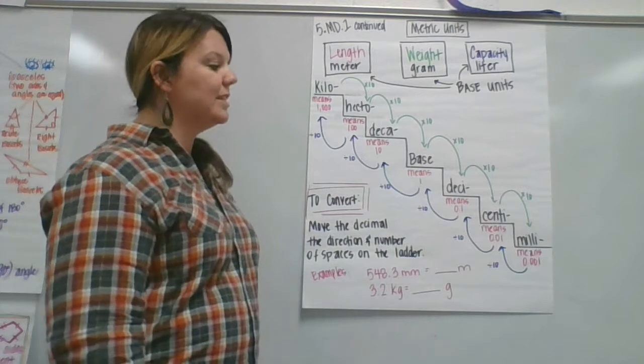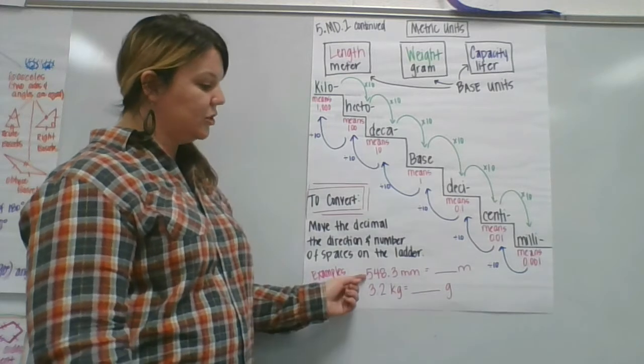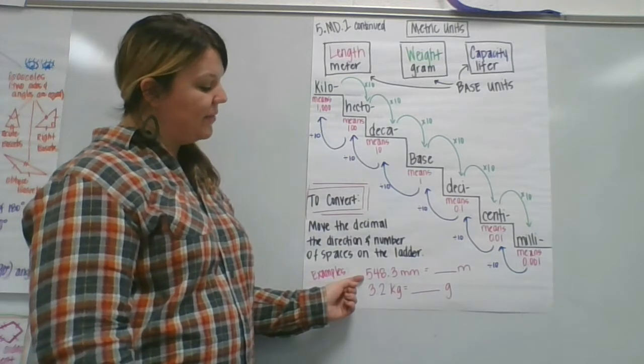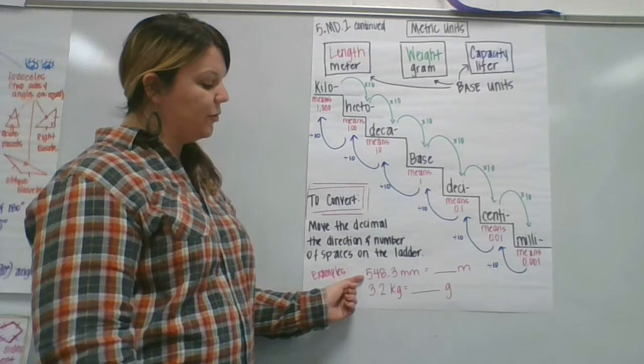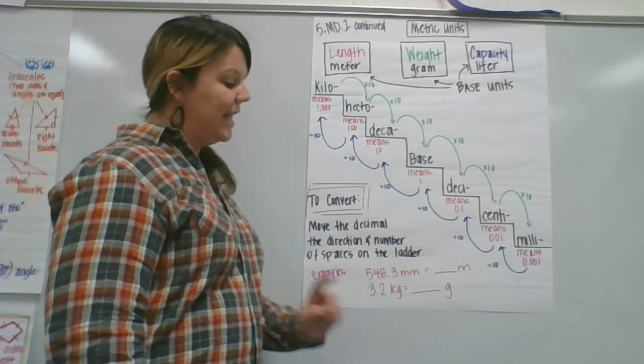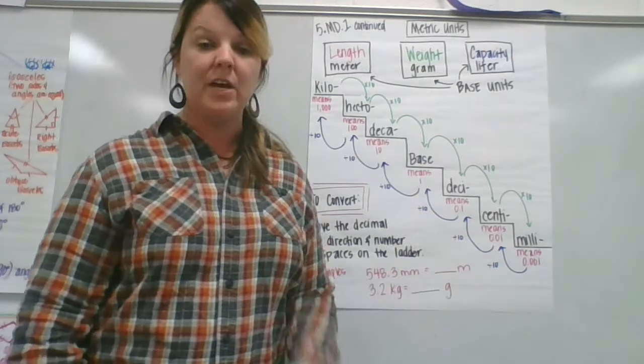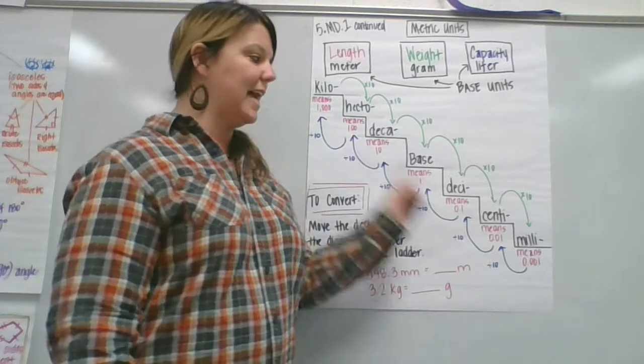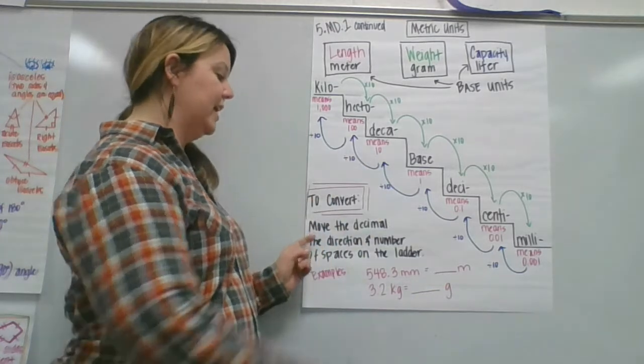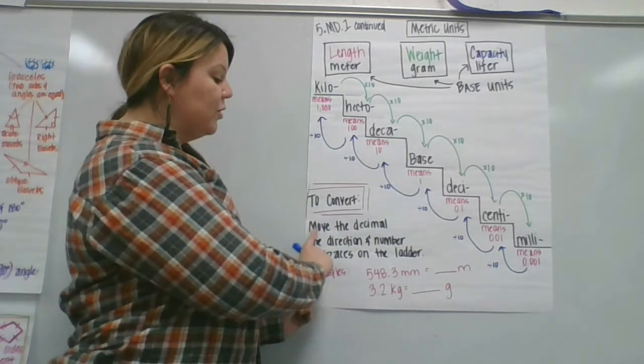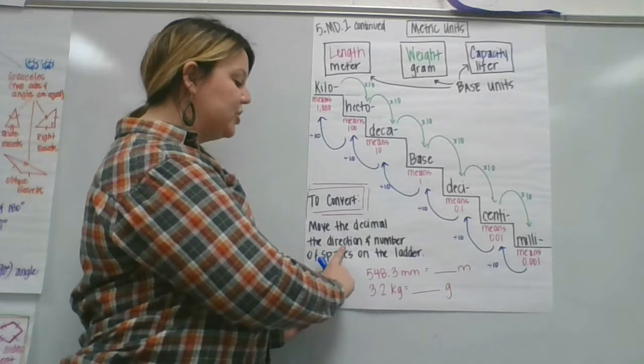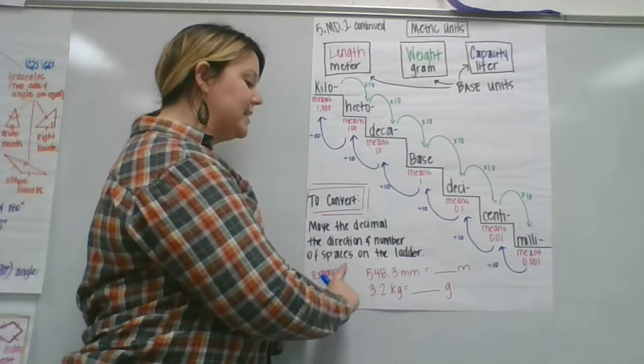So we can use this chart to answer questions. The first one here says 548.3 millimeters equals how many meters? So I want to show you the directions and how I can use the chart to answer the question. So it says to convert, move the decimal, the direction and number of spaces on the ladder.